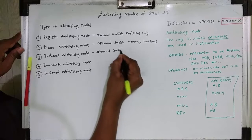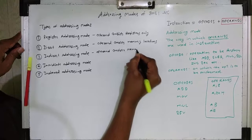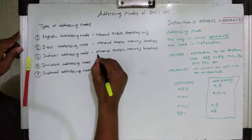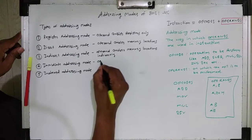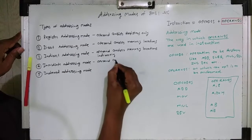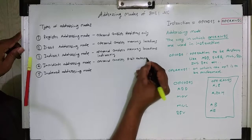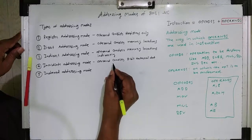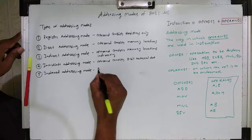In direct addressing mode, the operand consists of memory locations only. In indirect addressing mode, registers R0 or R1 from the selected register bank are used as memory pointers, which must be preceded by the @ sign. In immediate addressing mode, the user can write their own data, and it must be preceded by the hash (#) sign.